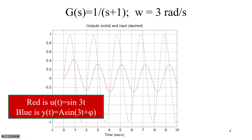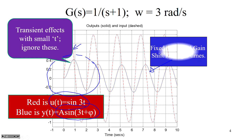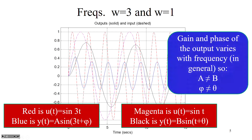Here's an example. The input signal is sin(3t), shown by the red line, and the output signal is A·sin(3t + φ), shown in blue. If we ignore the transients, we can see that asymptotically we get a fixed phase and gain. The gain A produces a peak-to-peak amplitude of 2A, and you can see there is a phase shift between the peak of the input and the peak of the output.